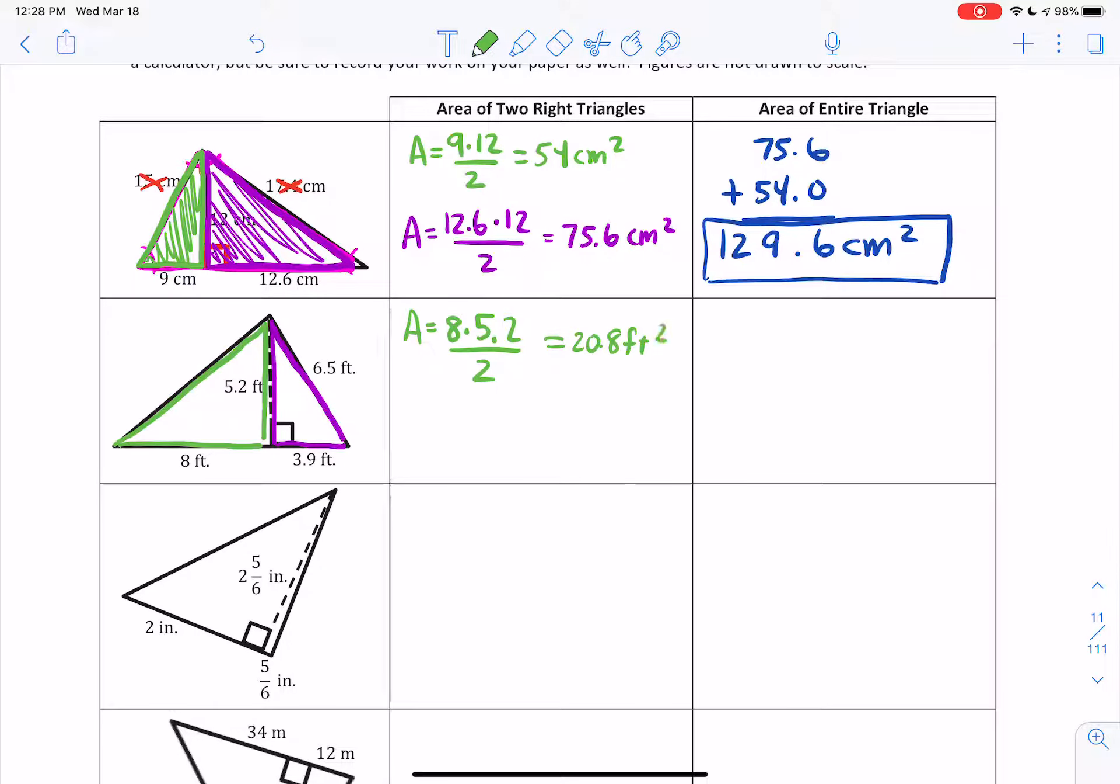20.8 feet squared. And then for the purple triangle, I have a base of 3.9, multiply that by 6.5, and I'm going to divide that by 2. 3.9 multiplied by 6.5 divided by 2. And I get 12.675. Don't be afraid to use all of those decimals. And then I'm going to go over, and I'm going to add these two numbers together. I could use my calculator, sure, but I'm just going to go ahead and do this by hand. 12.675 added to 20.8. Notice how I lined up my decimals. I could add these zeros here. 5, 7, 8 plus 6 is 14. Carry the 1. 2 plus 1. 2 plus 1. Decimal comes straight down. And there's my answer. 33.475 feet squared.